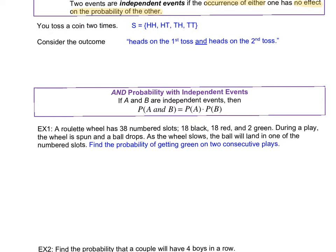You toss a coin two times. This is the sample space we had before: heads on your first toss and heads on the second, heads-tails, tails-heads, and tails-tails. We're going to consider the particular outcome of heads on your first toss and then heads on the second toss — heads and heads — which is the first event, HH. The probability of getting heads and heads: we look at our sample space and we see there are four outcomes, and only one of them would be heads on first toss and heads on second toss.